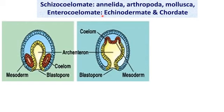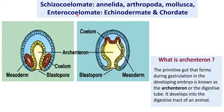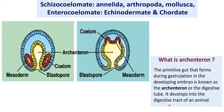Based on the formation of the coelom, true coelomate animals are divided into two groups: schizocoelom and enterocoelom. In schizocoelom, the body cavity is formed by the splitting of the mesoderm — such animals include Annelida, Arthropoda, and Mollusca. In enterocoelom animals, the body cavity is formed from mesodermal pouches of the archenteron — such animals are echinoderms and chordates. The archenteron, or digestive tube, develops into the digestive tract of an animal.